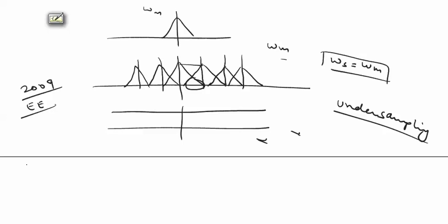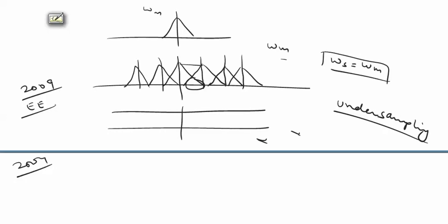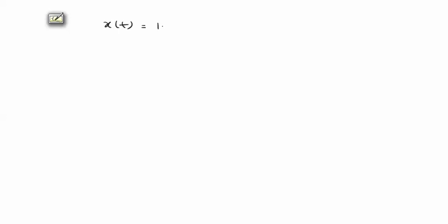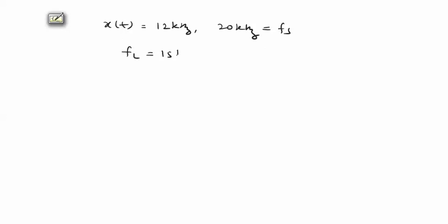Now let's discuss a GATE exam question regarding sampling. In that particular question, a message signal of 12 kilohertz is sampled with a sampling frequency of 20 kilohertz (fs), and the sample is then passed through a low pass filter of 15 kilohertz. What will be the output? We need to find the output frequencies.